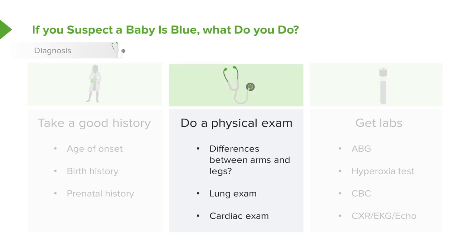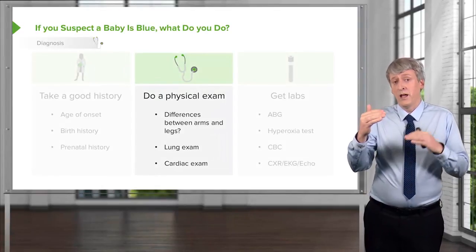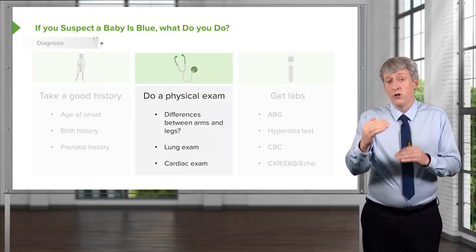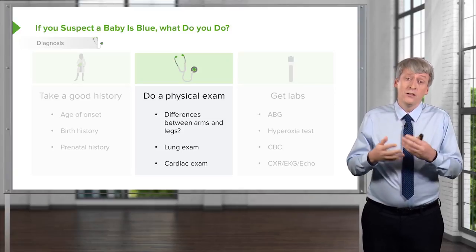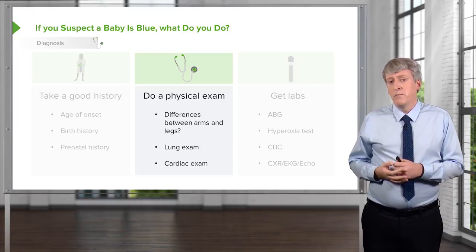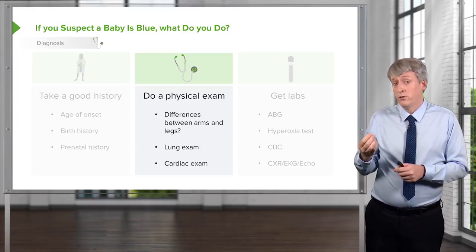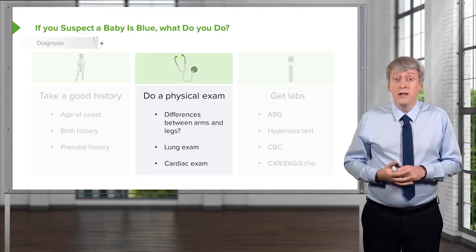Differences between the arms and the legs in terms of cyanosis can be a critical clue, because the patent ductus arteriosus arises between where the blood supply comes off the aorta to the right arm and when it comes off to the rest of the body. So if a patient is cyanotic in one place but not the other, it might give you clues as to the etiology. Diseases that cause this include transposition of the great arteries and persistent pulmonary hypertension of the newborn. The lung exam is critical as well — a patient with crackles or a very wet lung exam may have a pulmonary problem or may be in congestive heart failure.